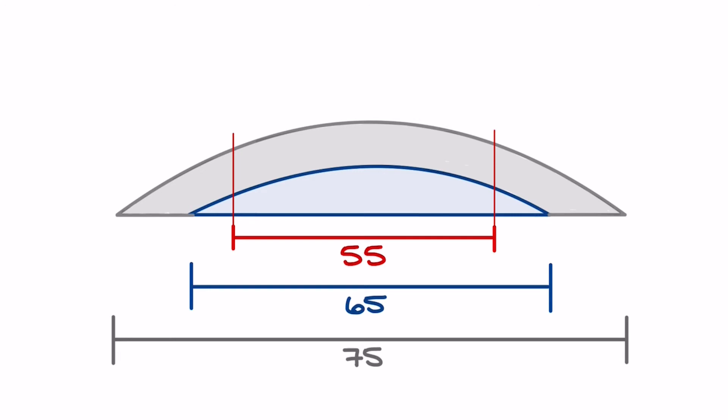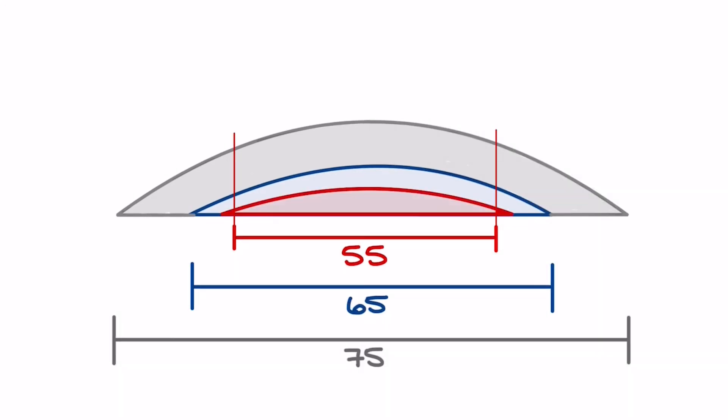Take this into consideration as the lens may be better off being processed in the surfacing lab. When a plus lens is surfaced, the minimum edge thickness can be based on the final lens diameter as opposed to the blank diameter.